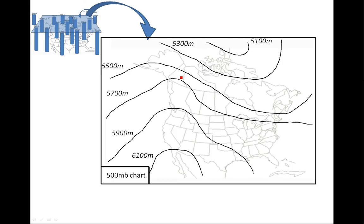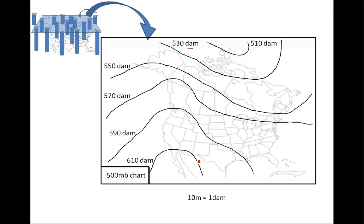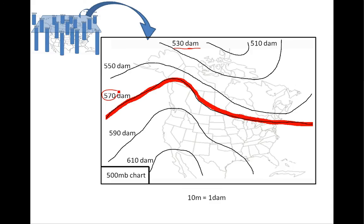On a 500 millibar chart, the heights aren't expressed in meters — for some reason they use decameters, where one decameter is just 10 meters. So we adjust the units by dropping one zero from all those numbers. What was 5,300 meters becomes 530 decameters. Now we've got something that looks very close to a 500 millibar chart. And if you look at the labels on there — there's the number 570. The 570 line is just one of those height contours on the 500 millibar chart.